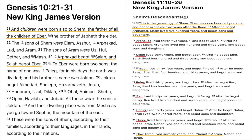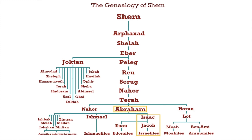If you read Genesis chapter 11, verse 10 through 26, it says: 'This is the genealogy of Shem. Shem was 100 years old and begot Arphaxad two years after the flood. After he begot Arphaxad, Shem lived 500 years and begot sons and daughters.' So from verse 10 to 26, it reads: Arphaxad, Shelah, Eber, Peleg, Reu, Serug, Nahor. Now Terah lived 70 years and begot Abraham.